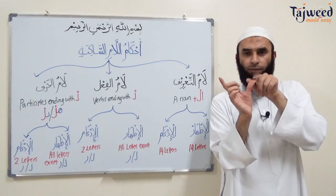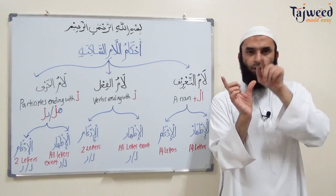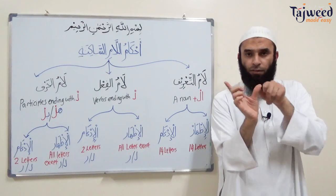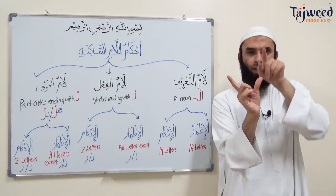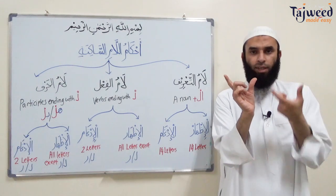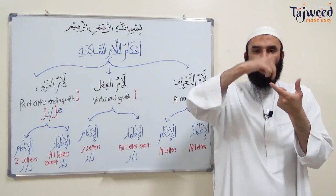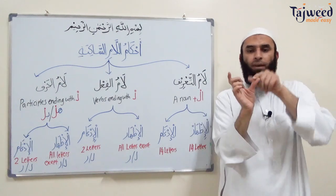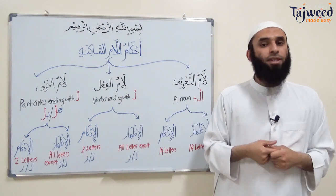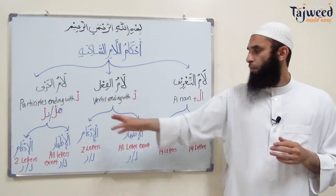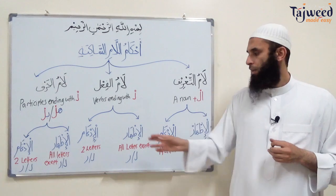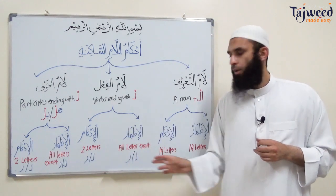Likewise with the فعل (verb): if اللام الساكنة comes at the end of the verb, the following letter affects how we pronounce this لام. This effect is also of two categories, just like with لام التعريف: الإظهار and الإدغام. الإظهار means we pronounce the لام clearly, and الإدغام means the لام merges into the following letter.